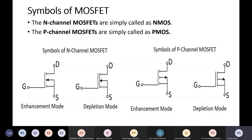One important thing to remember: for any device of the MOSFET family, or even for the BJT, the arrow direction is always from P to N side — just like the diode. If you ever forget the direction of the arrow, just remember it is always from P-type to N-type.